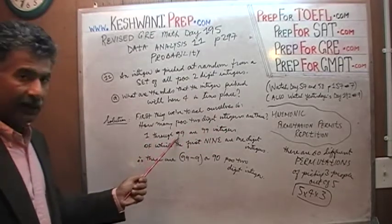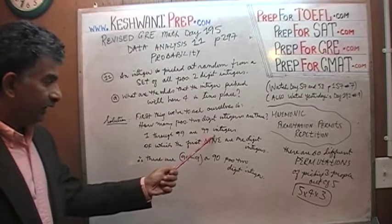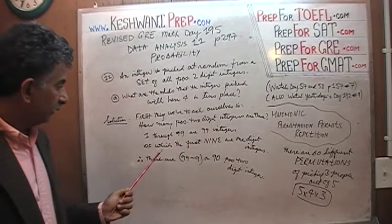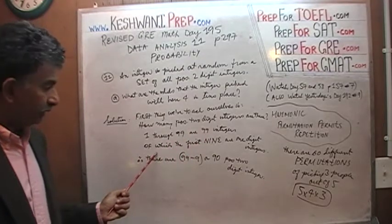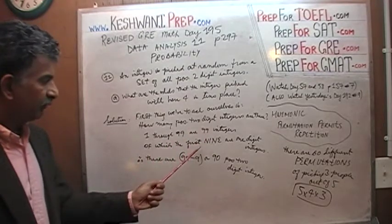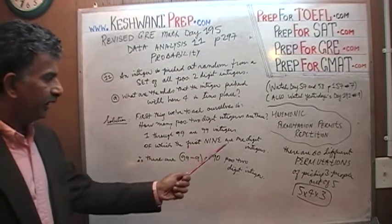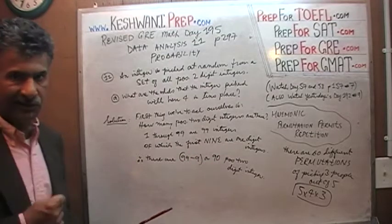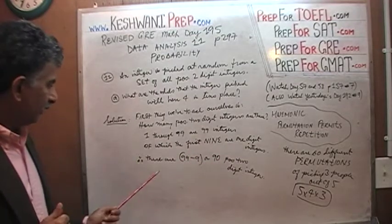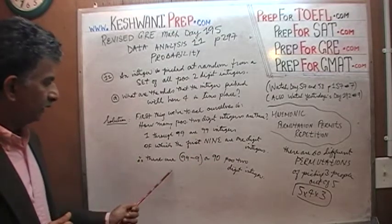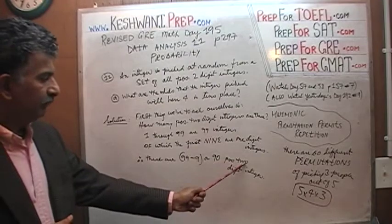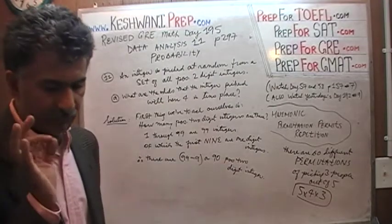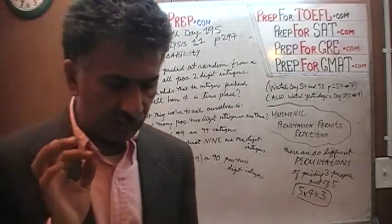1 through 99 are 99 integers, of which the first nine — 1 through 9 — are simply one-digit integers. Therefore, there are 90 positive two-digit integers.